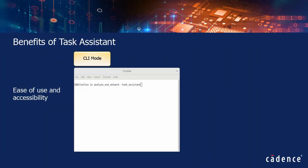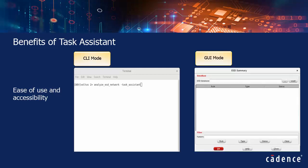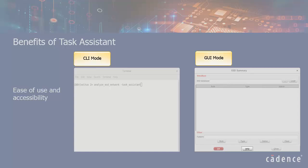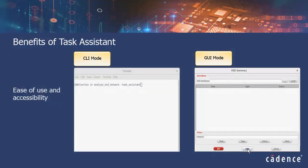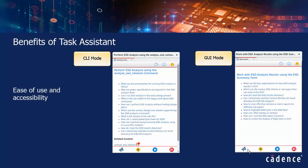Alternatively, if you wish to access Task Assistant in the GUI mode, click the Help button on the ESD summary form. The Task Assistant displays the contextual content with respect to CLI and GUI modes.